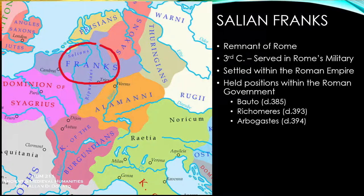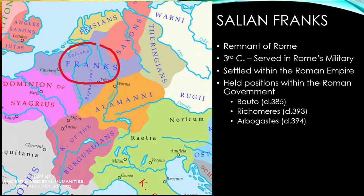The last of these, Arbogast, was the power behind Western Emperor Valentinian II. Valentinian tried to have his command removed, which ultimately resulted in Valentinian's assassination. Arbogast then seized control of the Western Empire and put in his own puppet emperor, Eugenius. This ultimately failed because the eastern emperor Theodosius defeated him at the Battle of the Frigidus, and Arbogast committed suicide.